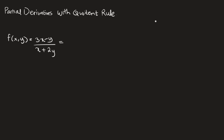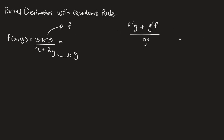Remember the quotient rule from your first calculus class, Cal 1. The formula is f prime times g minus g prime times f, all over g squared, where the upper function is f and the lower function is g.